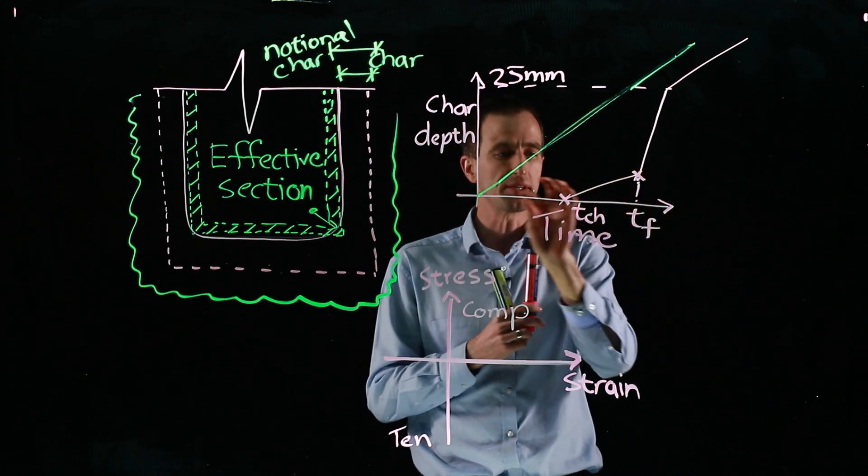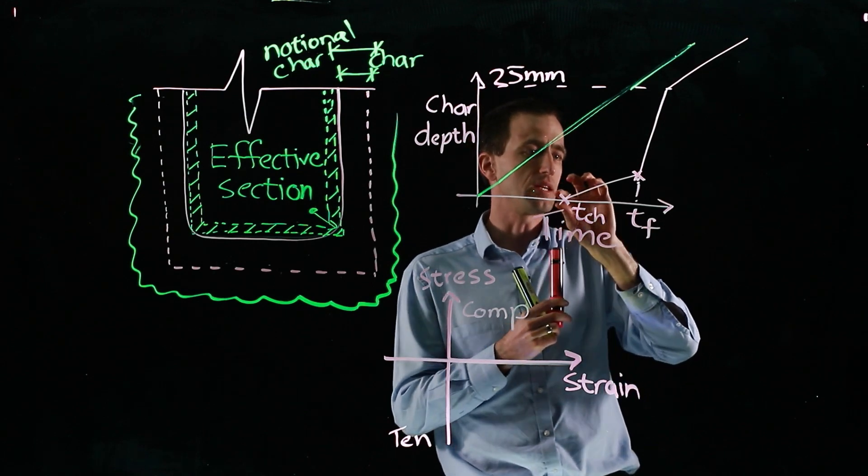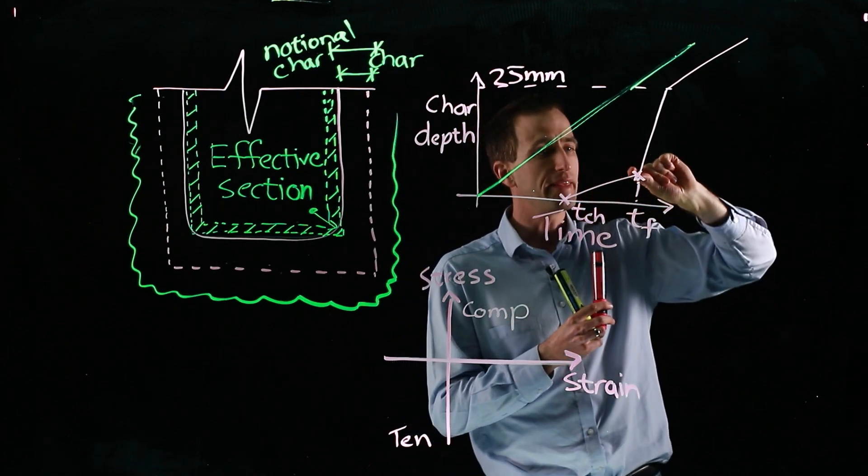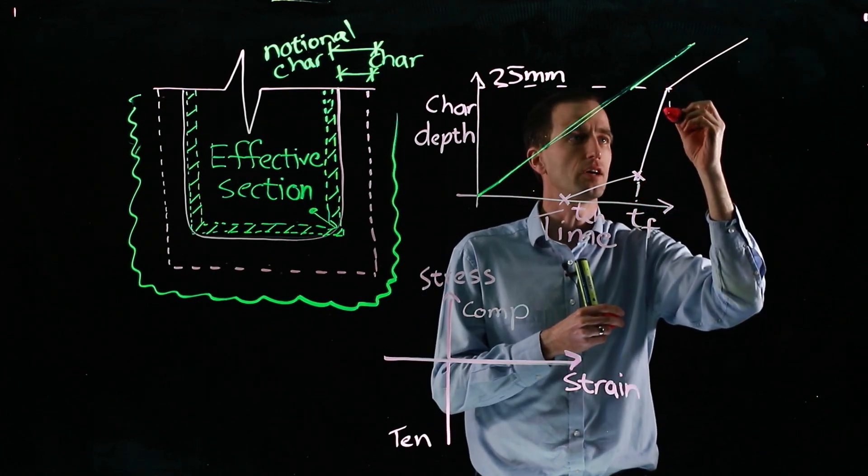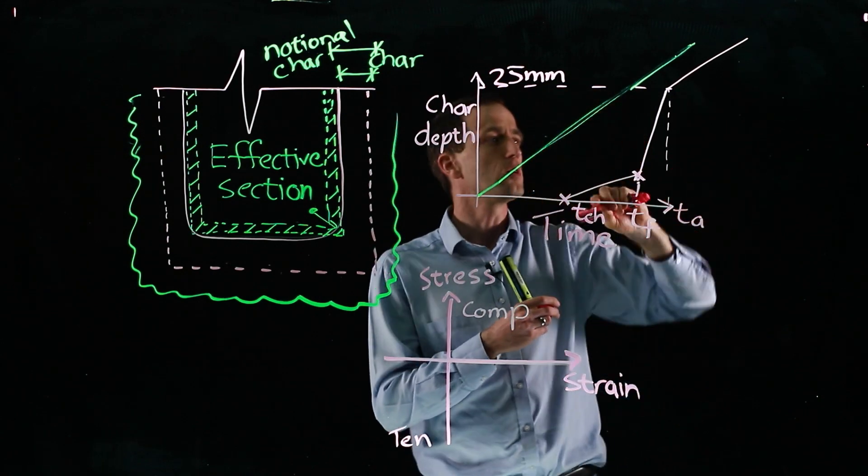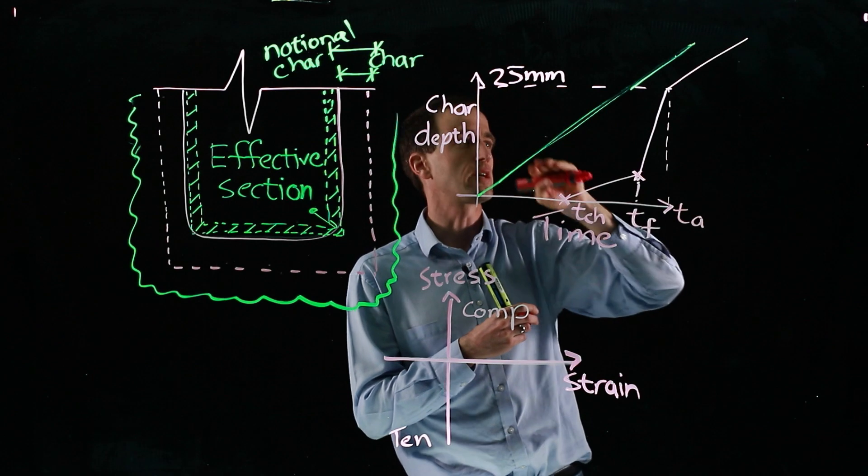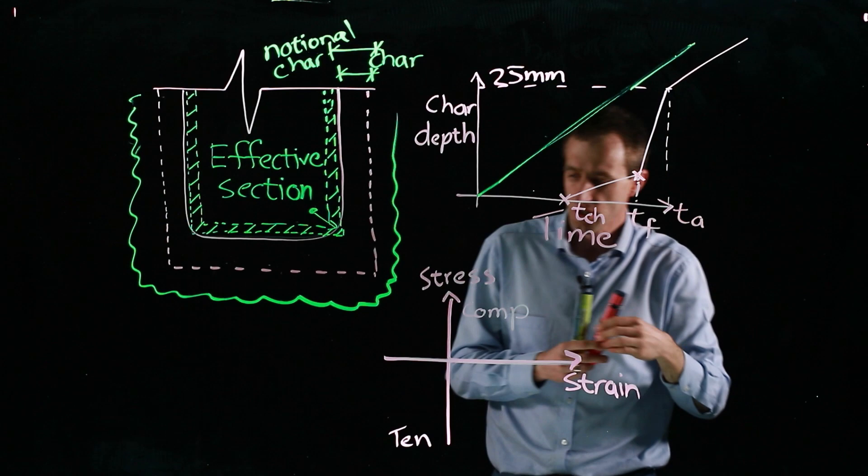So that gives an overview. Initially, no charring. And then the board is still in place, but the charring rate is slower. And then board falls off, it fails, time of failure, then it goes up until we have our layer at time TA, where it reaches a char depth of about 25 millimeters, and then it continues on at roughly the same rate.